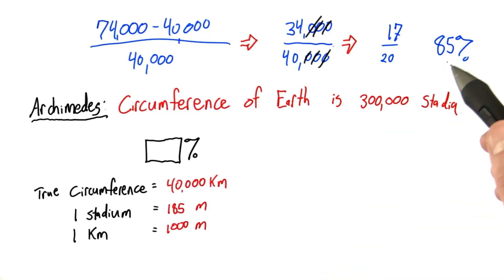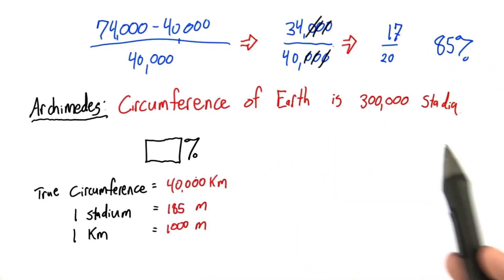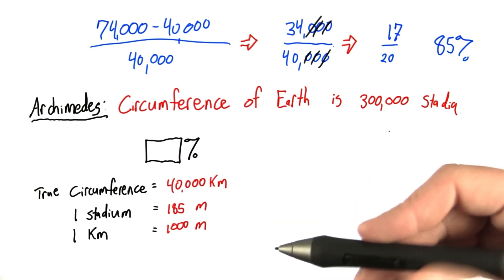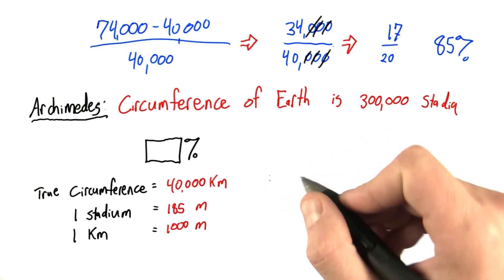Before I can make any error calculation, I'm going to need to get 300,000 stadia into kilometers. So let's go through that process.